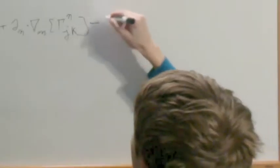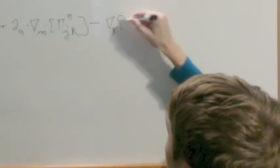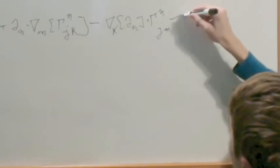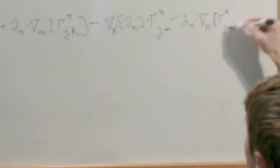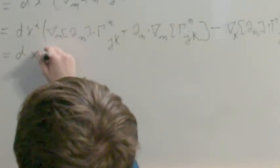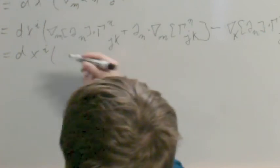Okay, so this is going to be equal to DX I applied to, right there, that's just simply going to be del R times gamma R and M times gamma N, J, K.